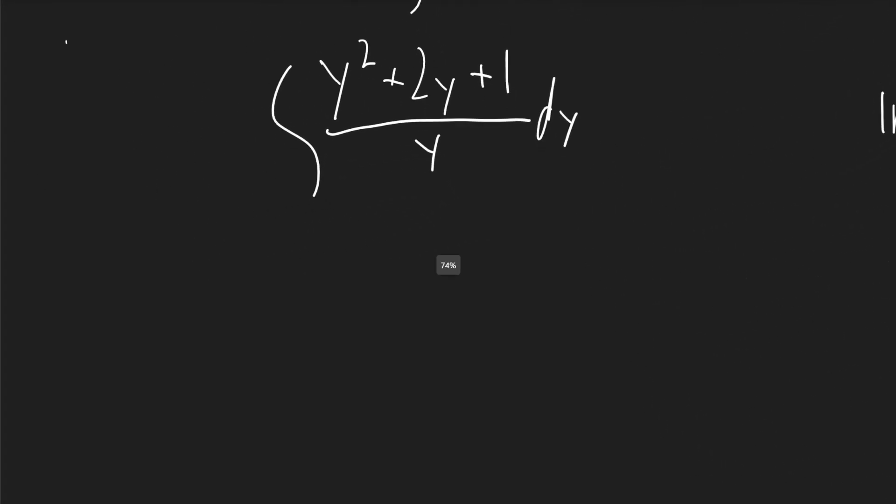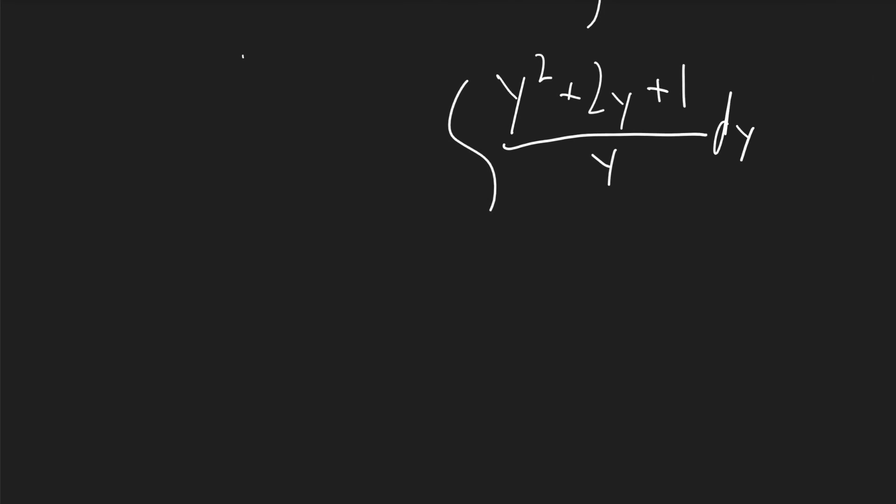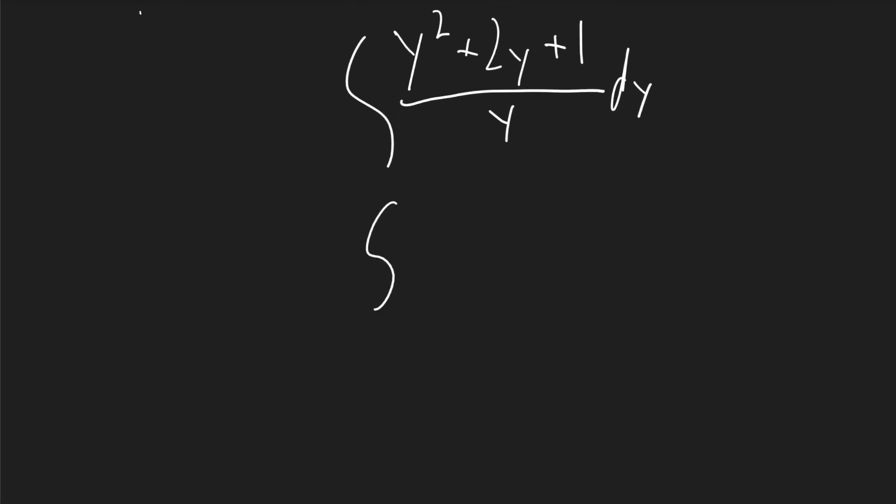Now I'll do the left side. I'll separate this, and I'll get the integral of y squared over y plus the integral of 2y over y plus the integral of 1 over y.